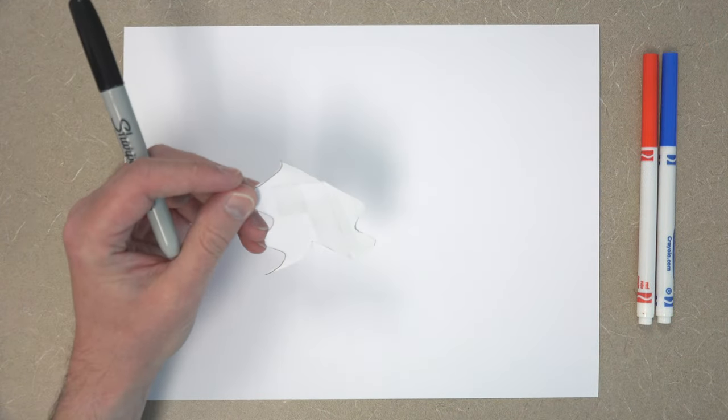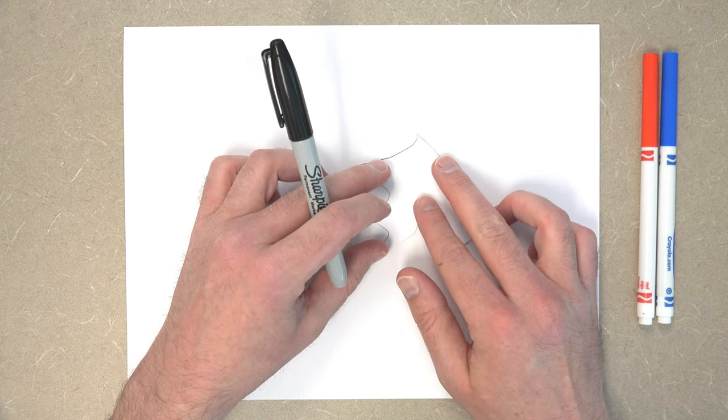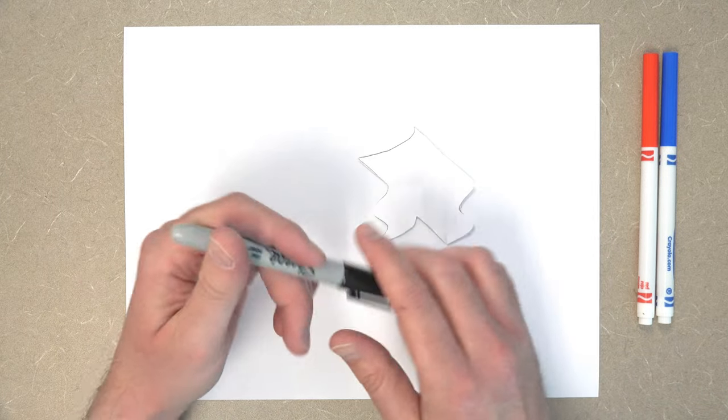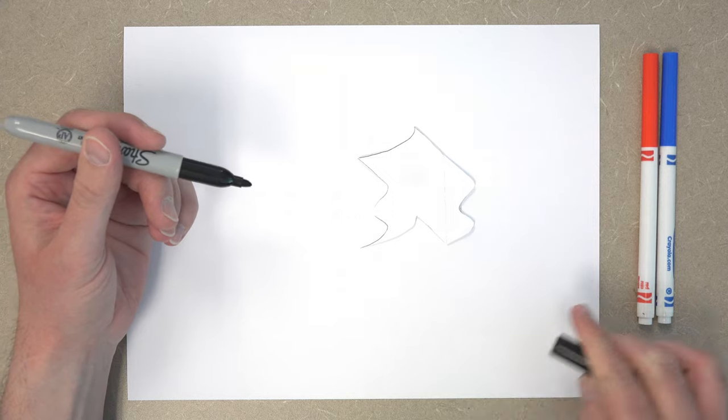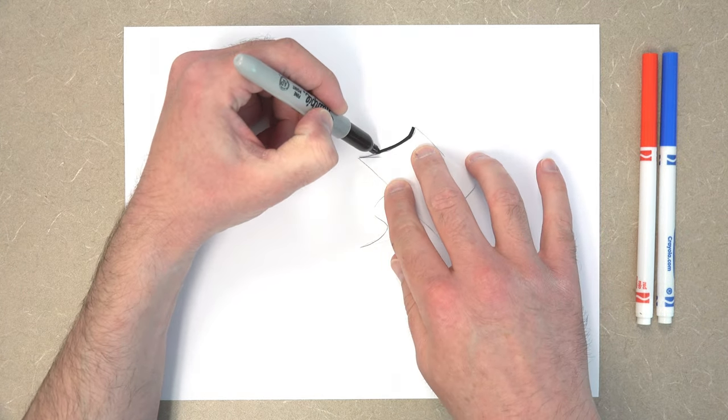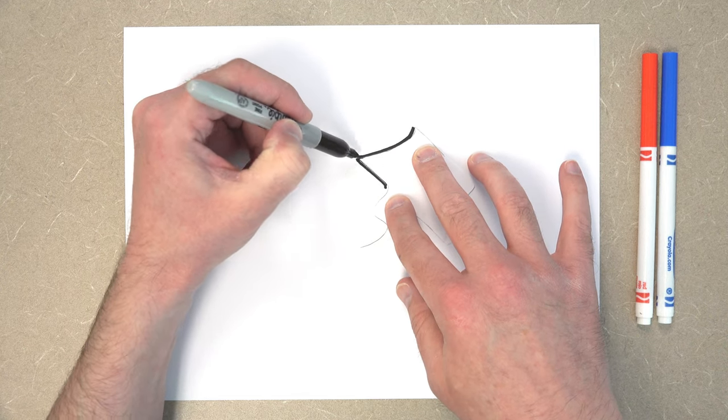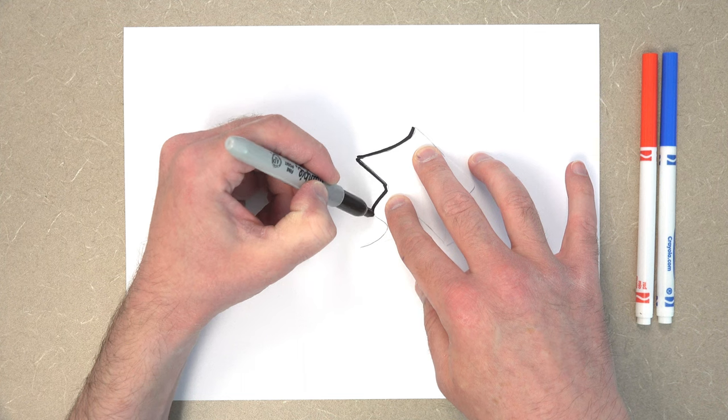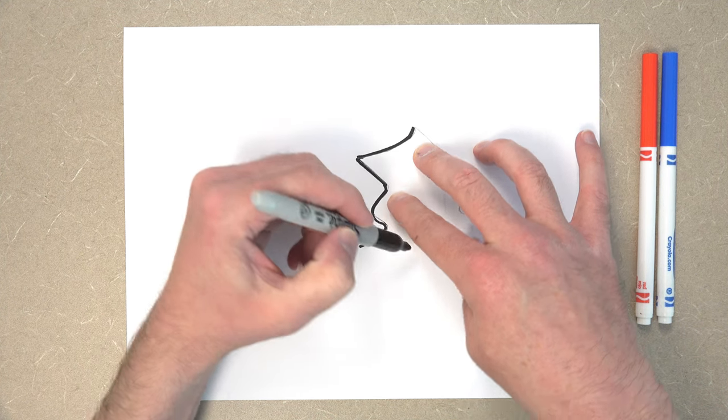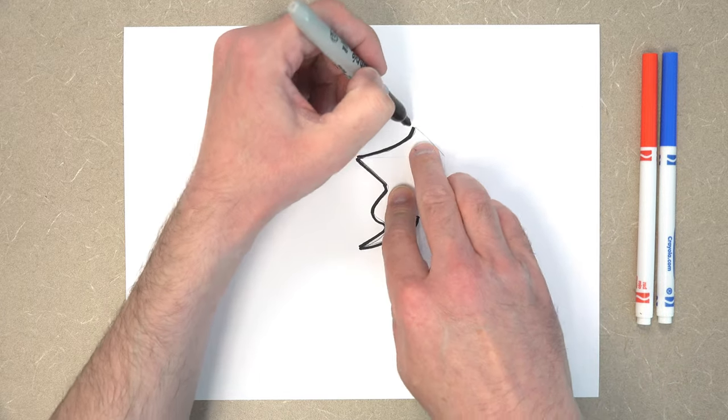Now we'll take our template and just put it on a piece of paper anywhere. It doesn't need to be in the middle. It can be on the side or wherever you want, really. And then hold it down and trace it. If you just outline the entire shape as closely as you can.